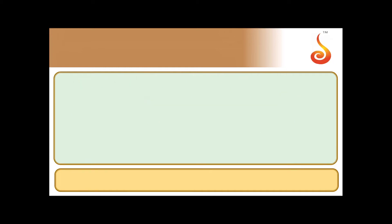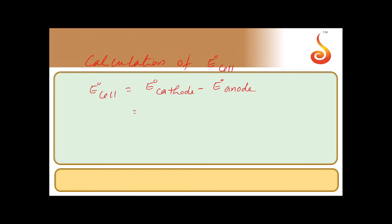Let us start Step 1: calculation of E0 of the cell. We know that E0 of cell = E0 of cathode minus E0 of anode. The cathode is copper, so +0.34V, minus the anode which is zinc, -0.76V. The value comes to 1.1 volts. That is the E0 value we found.